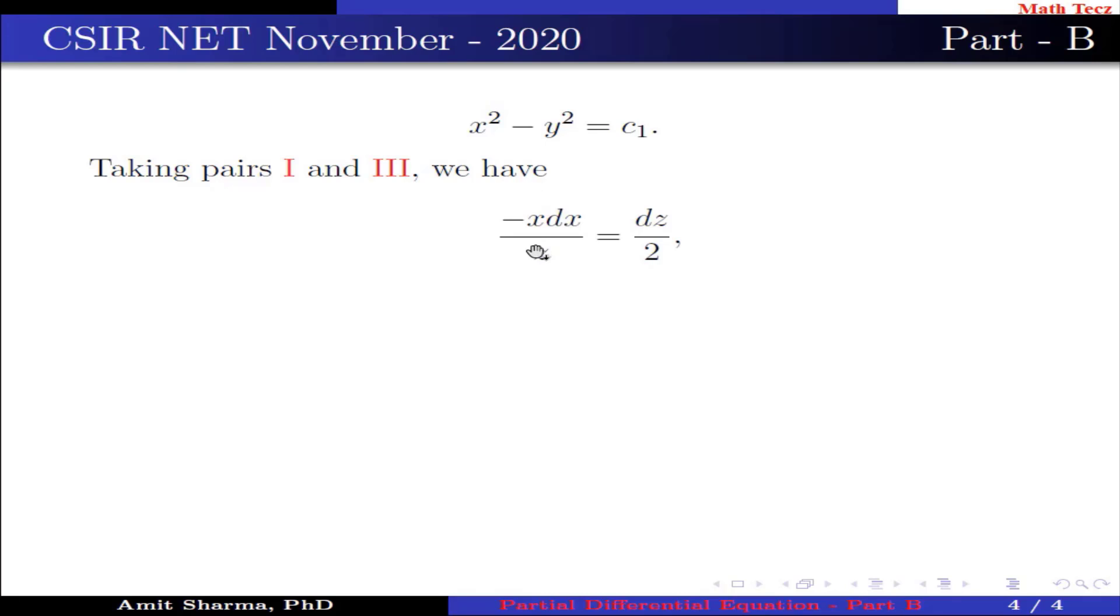Taking pairs I and III, we have -xdx = dz/2, which gives 2xdx + zdz = 0. Integrating, we get 2x² + z² = c₂. Thus, the required surface is φ(c₁, c₂) = 0, which implies φ(x² - y², 2x² + z²) = 0.